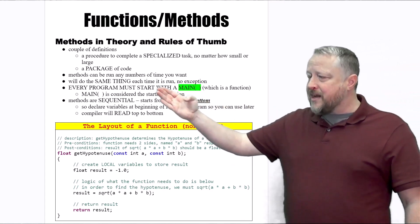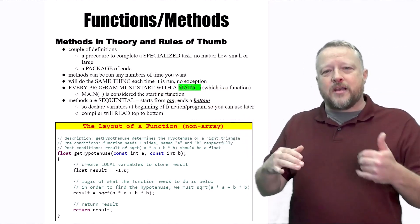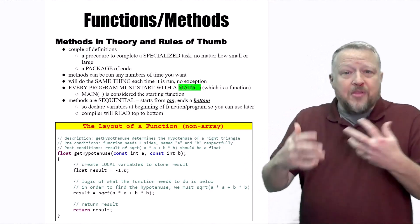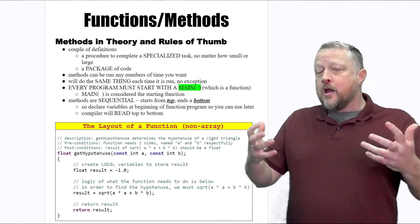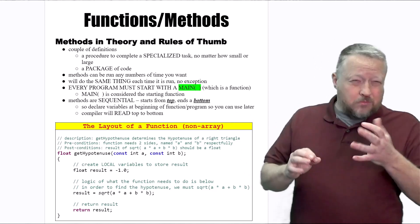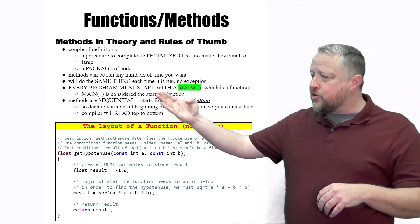We'll do the same thing each time it's run. We'll get into that in functions part two, but the method will try to do the same overall algorithm over and over again, but the inputs might be different, so there might be a little bit of change. Every program must start with the main, and that's a function.